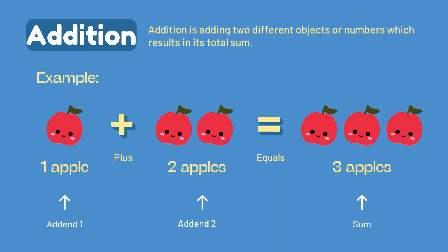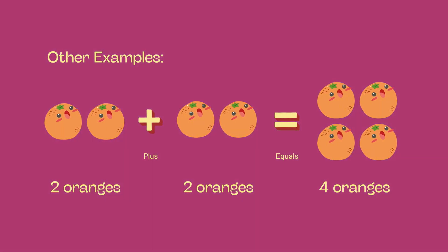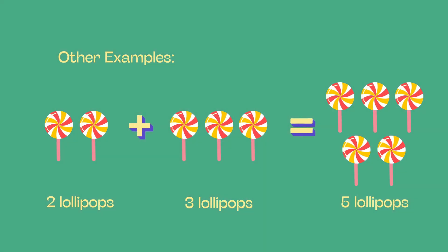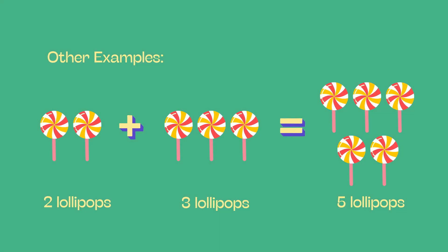Addition is adding two different objects or numbers, which results in its total sum. Example: one apple plus two apples equals three apples. Other examples: two oranges plus two oranges equals four oranges. Two lollipops plus three lollipops equals five lollipops.